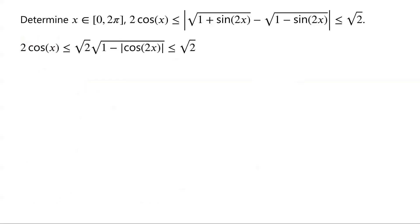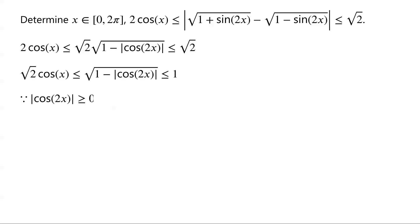Dividing the inequalities by √2, we have: √2·cos(x) ≤ √(1 - |cos(2x)|) ≤ 1. Because |cos(2x)| ≥ 0, we have √(1 - |cos(2x)|) ≤ 1 for all x in [0, 2π].